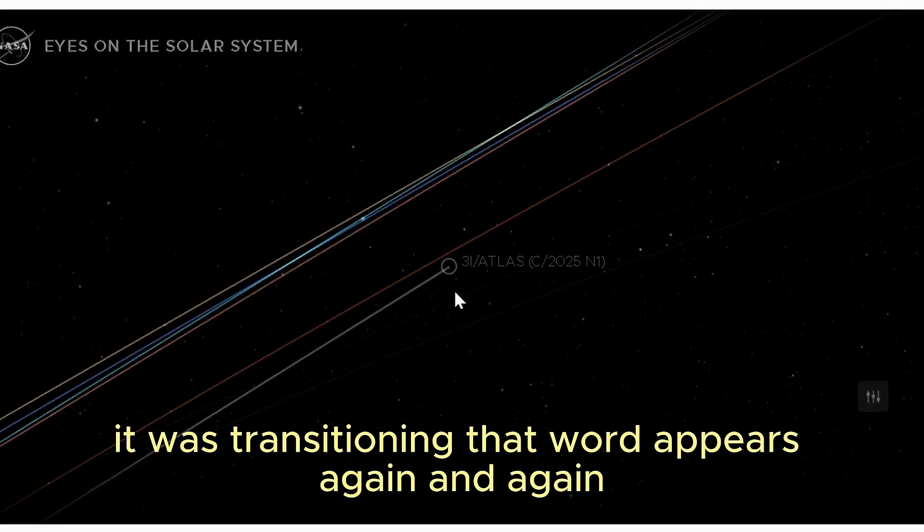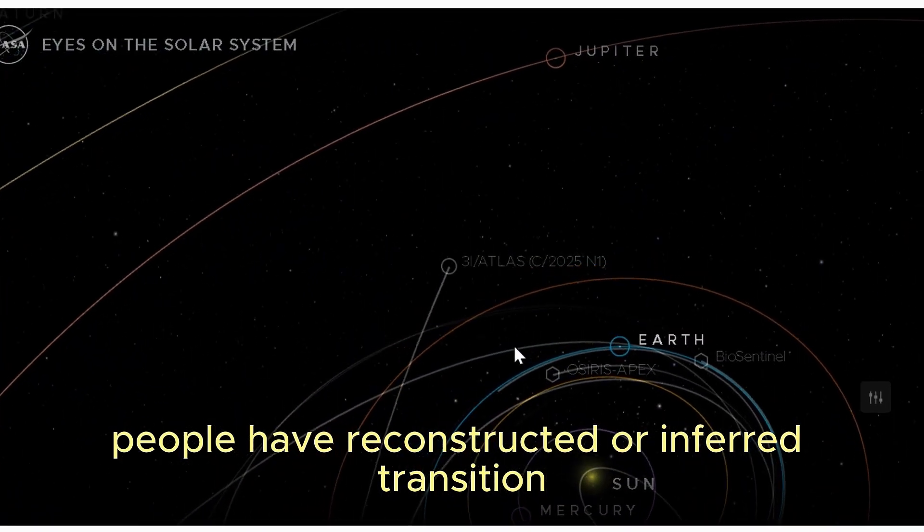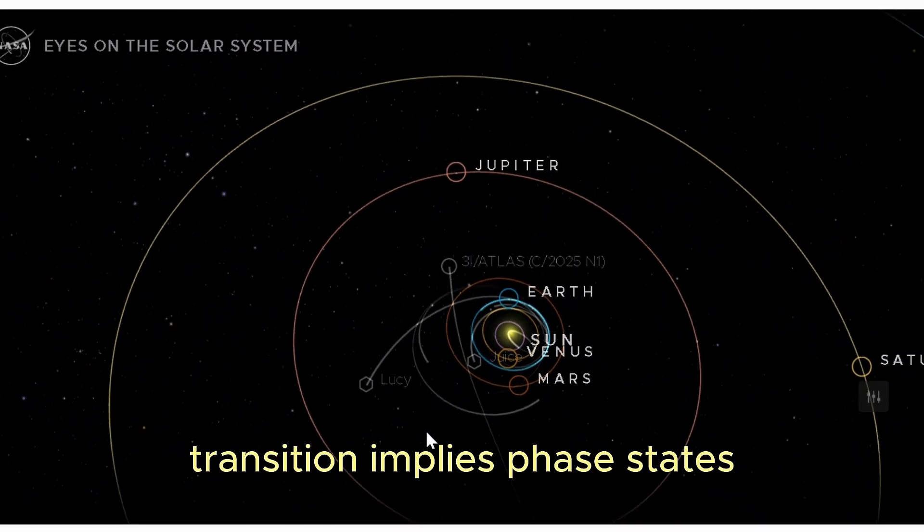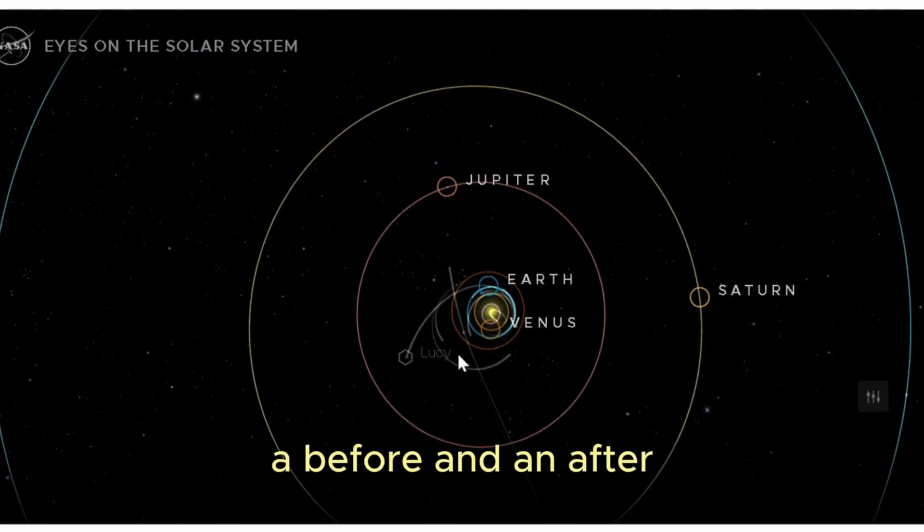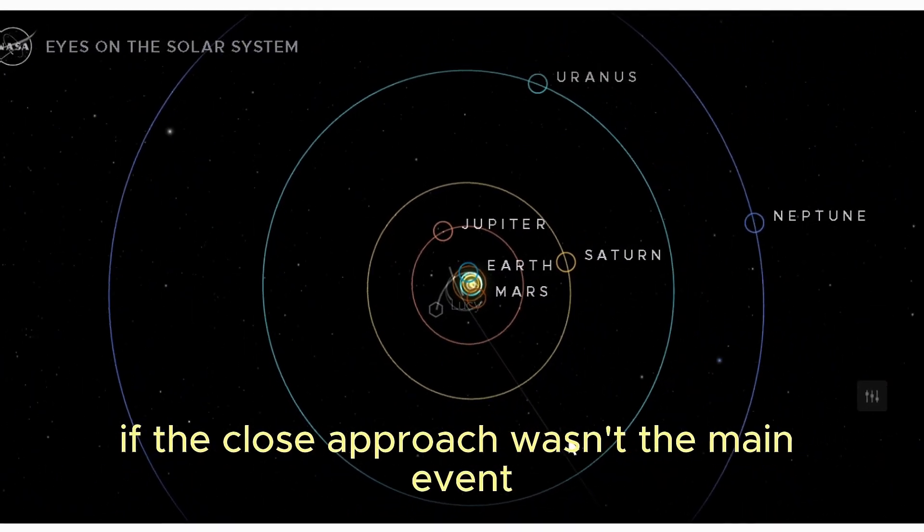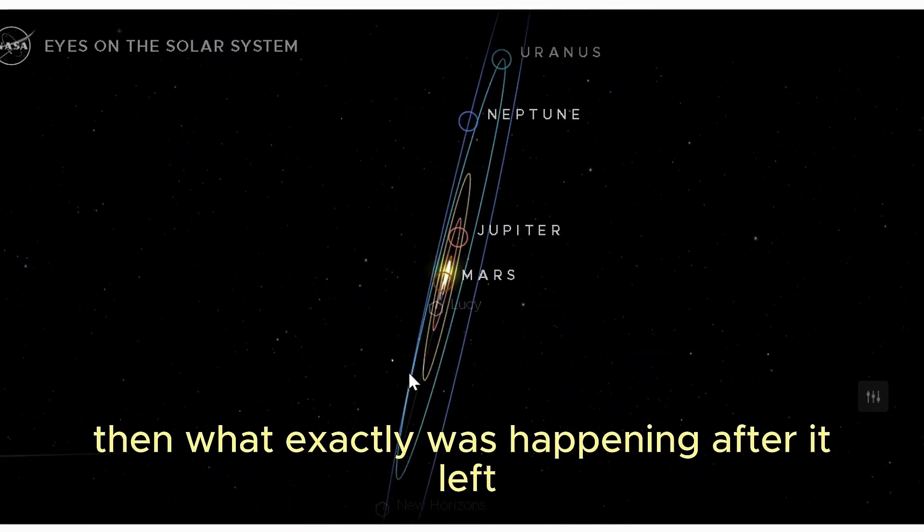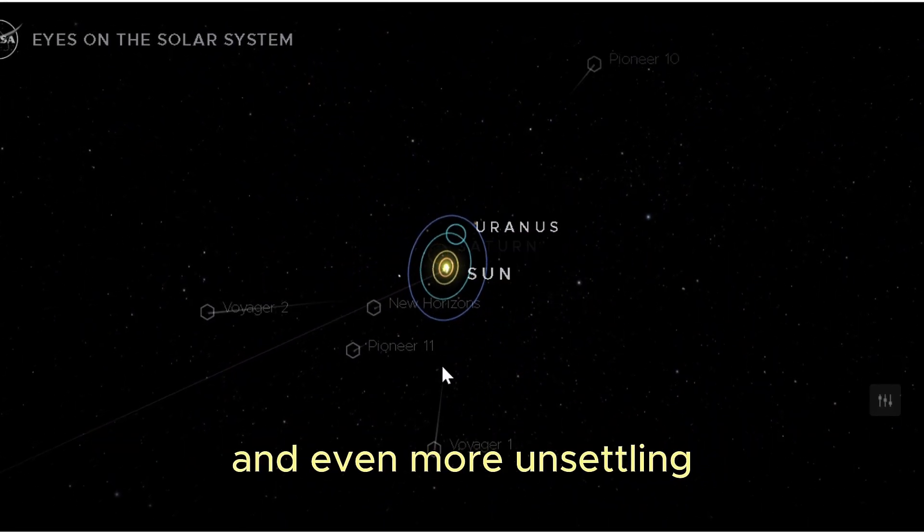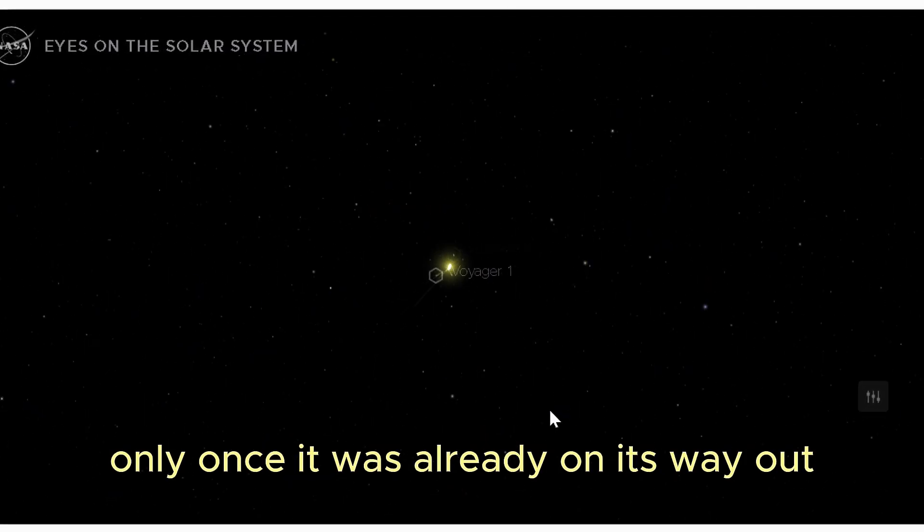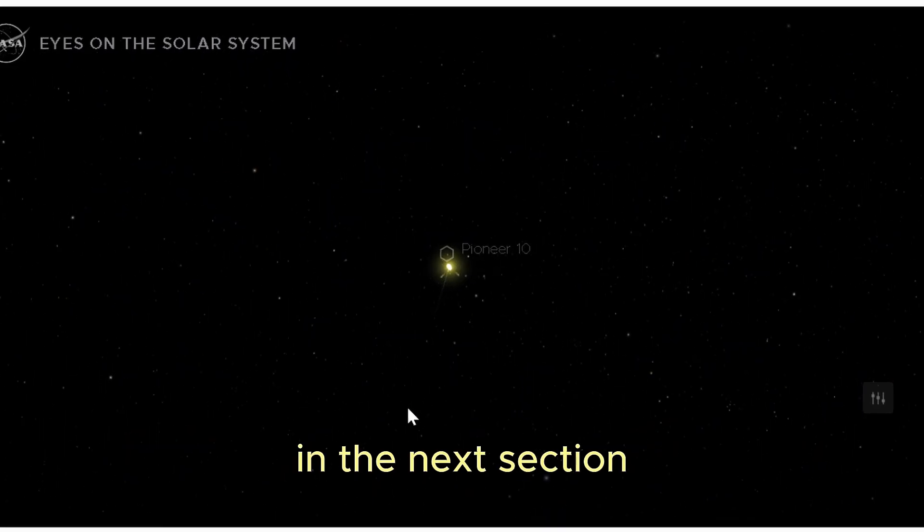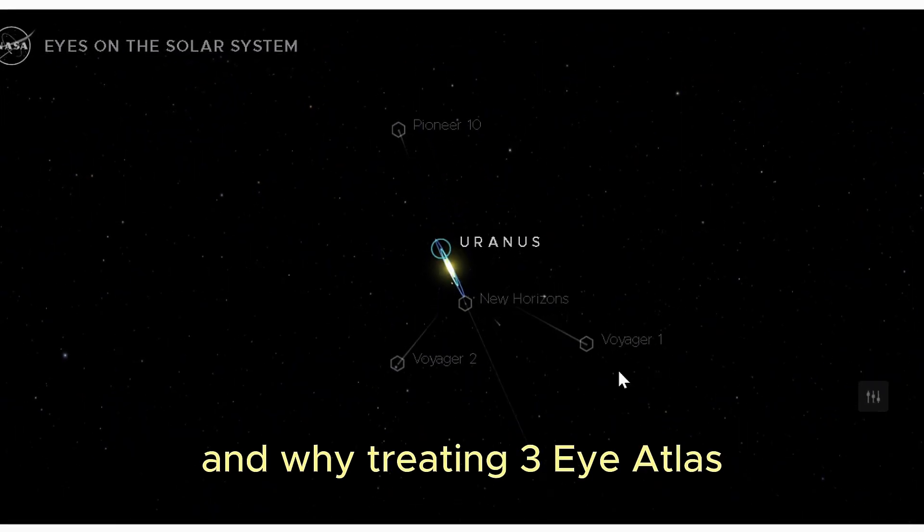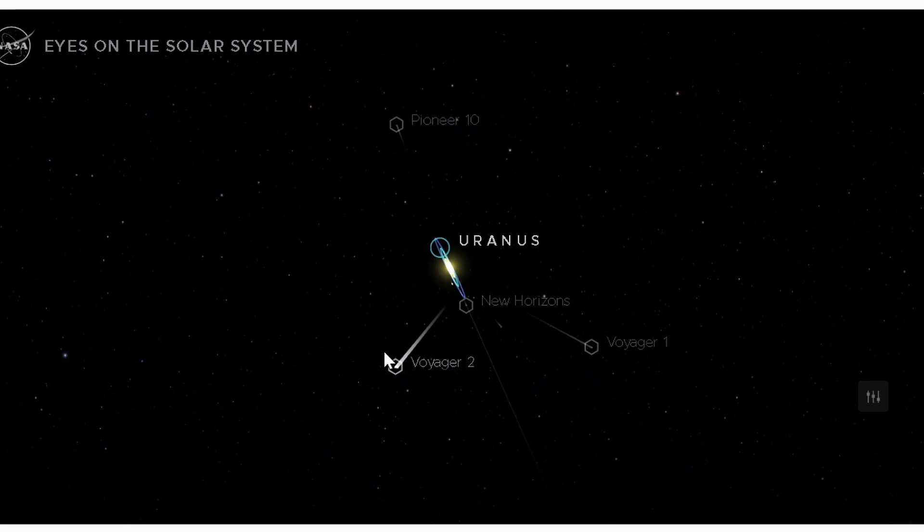That word appears again and again in technical style summaries people have reconstructed or inferred: transition. Not decay, not dissipation. Transition implies phase. It states a before and an after, which raises a deeply uncomfortable possibility. If the close approach wasn't the main event, if the flyby wasn't the purpose, then what exactly was happening after it left? And even more unsettling, why did the strangest behavior seem to begin only once it was already on its way out? We're only at the beginning of this part of the story. In the next section, we'll talk about how this outbound behavior forced analysts to abandon some of their usual models and why treating 3I Atlas like a passive lump of ice stopped making sense.